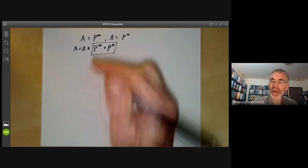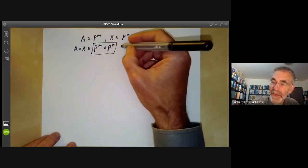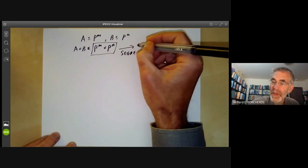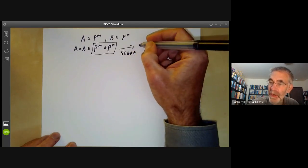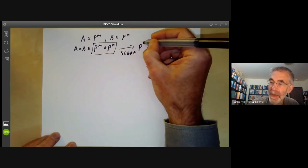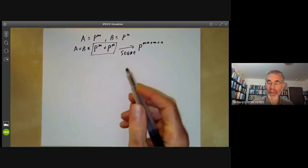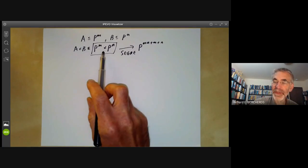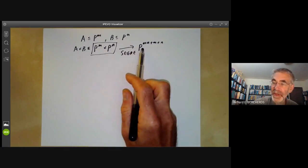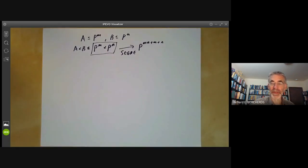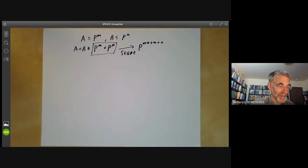Well, as we saw earlier, there's something called the Segre embedding which maps this into P to the M plus N plus 1. And what we want to do is show the image of this really is a product in the category of varieties.